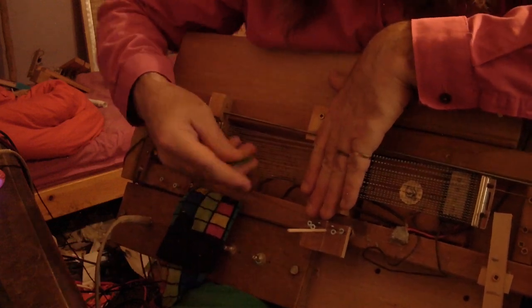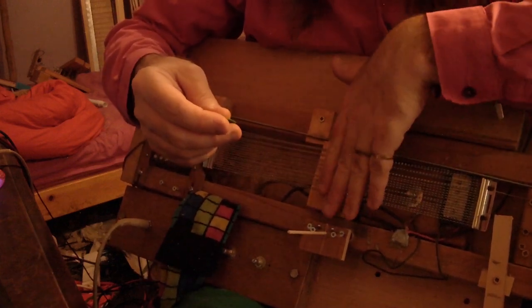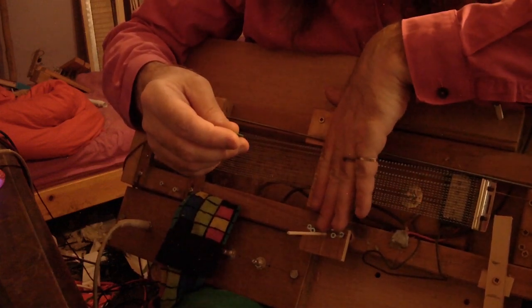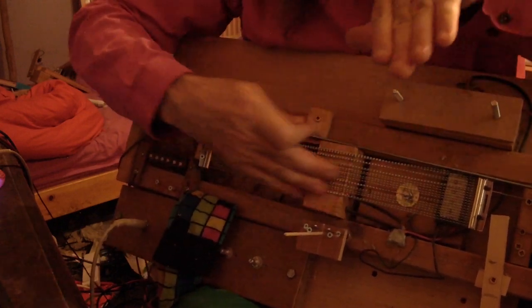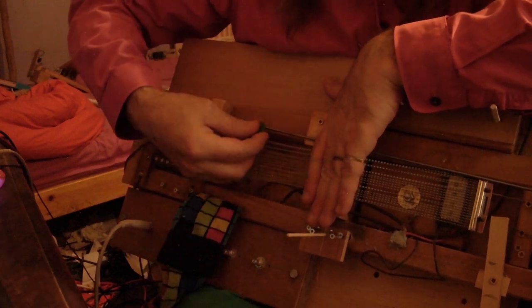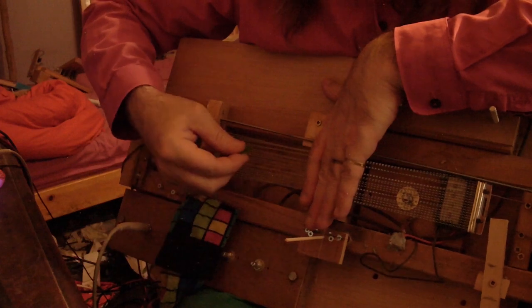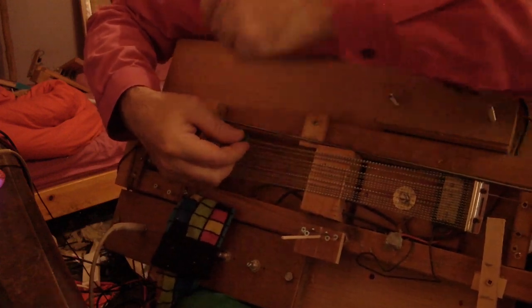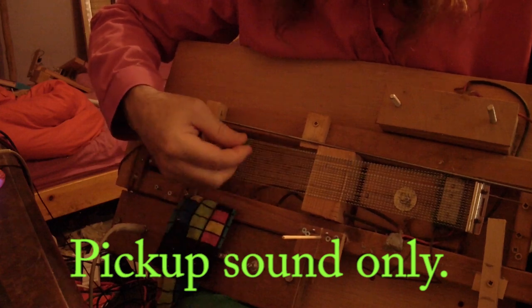This shows what the key that you press does. When you don't press the key, the other end of the key is pushed down against this bit of wood that the snare wire goes over to stop the pluckiness getting through. When you lift it off by pressing the key, which isn't there now...